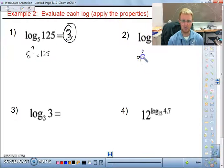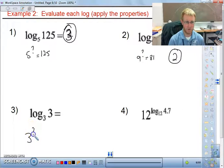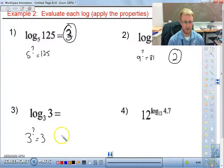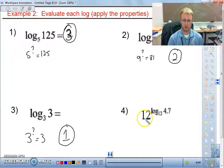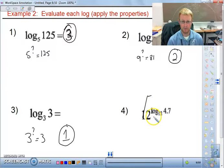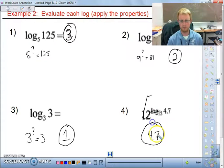5 to the third power equals 125. We have 9 to what power equals 81? And that is just 2. We have 3 to what power equals 3? And that's just 1. And then we actually have to apply a property in our last one. And we have 12 to the power of log base 12, so the 12 and the log base 12 are going to cancel out. So our answer is just 4.7.